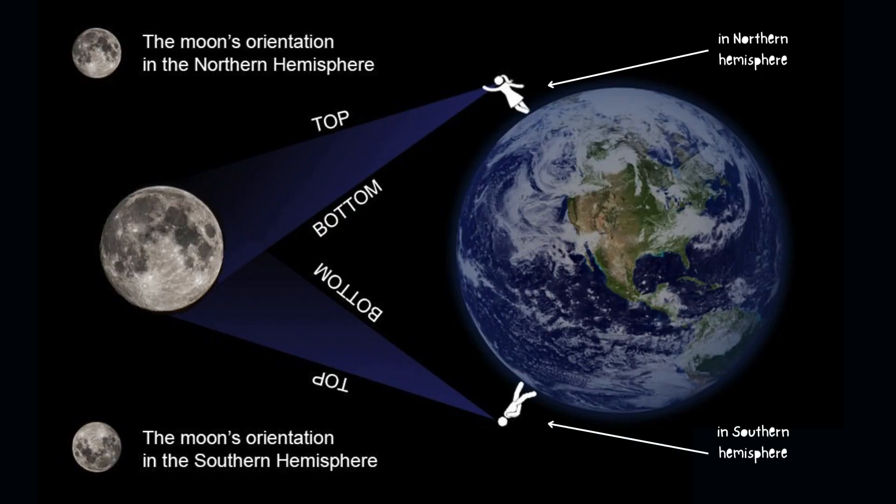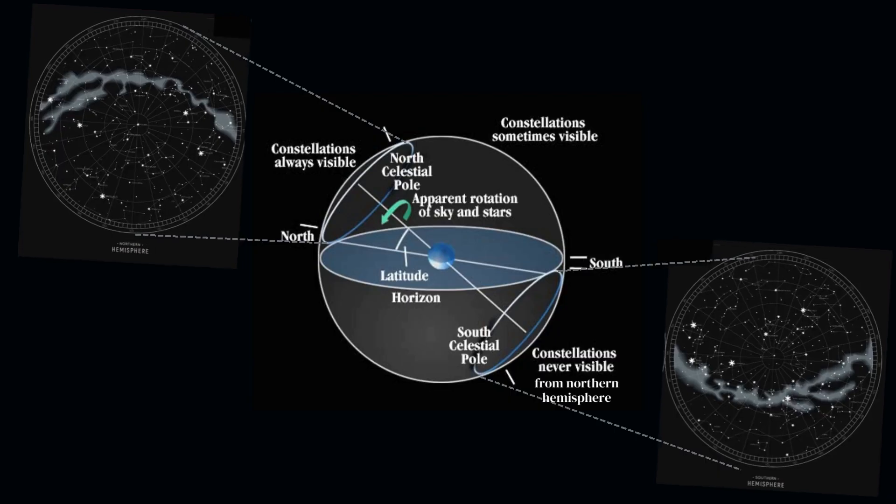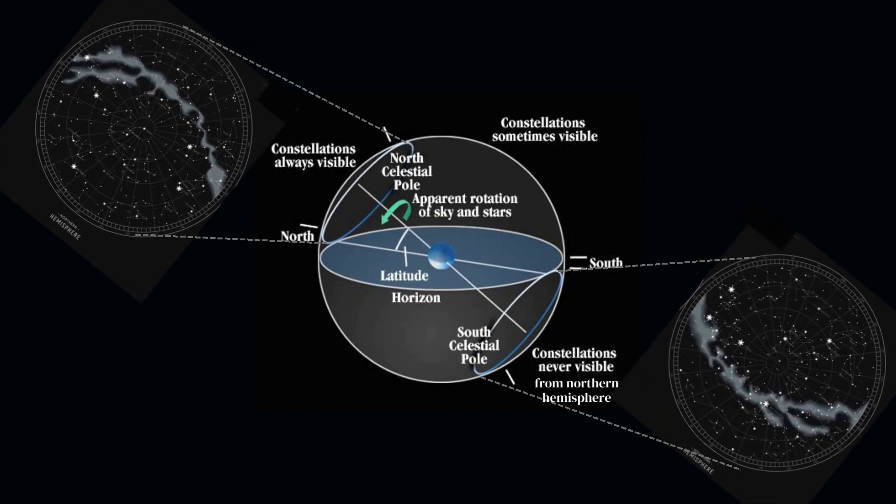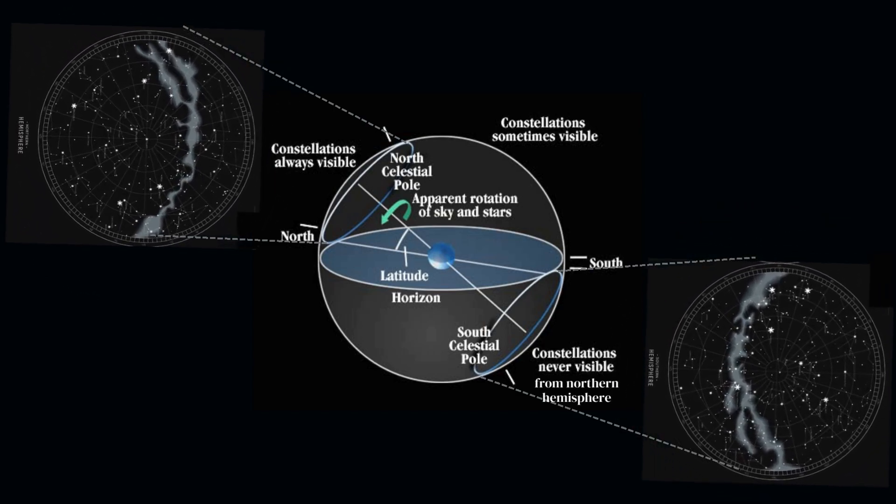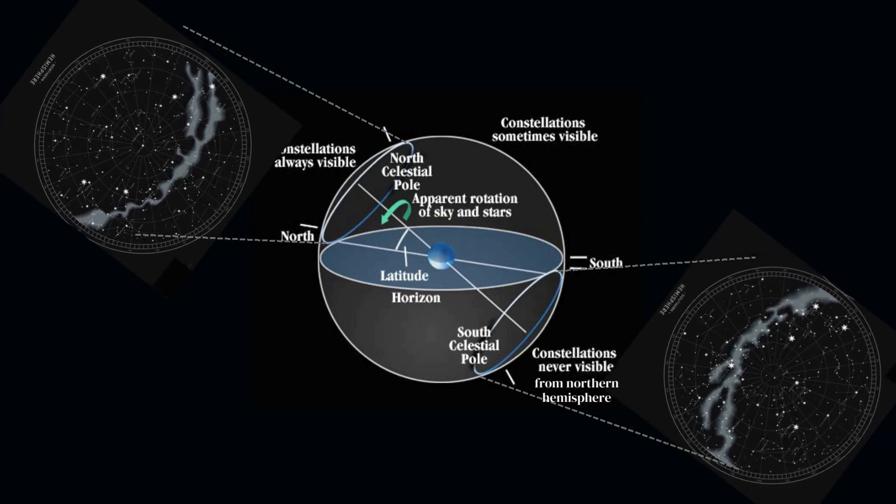Your geographical position on earth also plays a pivotal role in what constellations you can see. For instance, observers in the northern hemisphere can't see constellations visible from the southern hemisphere and vice versa.